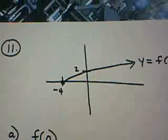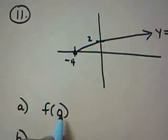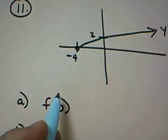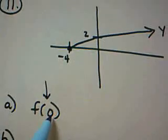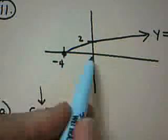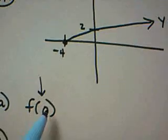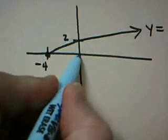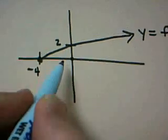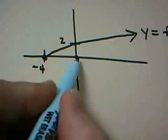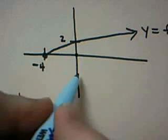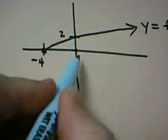You're asked to find f of 0. Remember that 0, this number right here, is an x value. So what I teach my students is to look on the x-axis, because 0 is an x value, find 0, and then walk up or down to get to the graph, because up or down helps me find the y value.